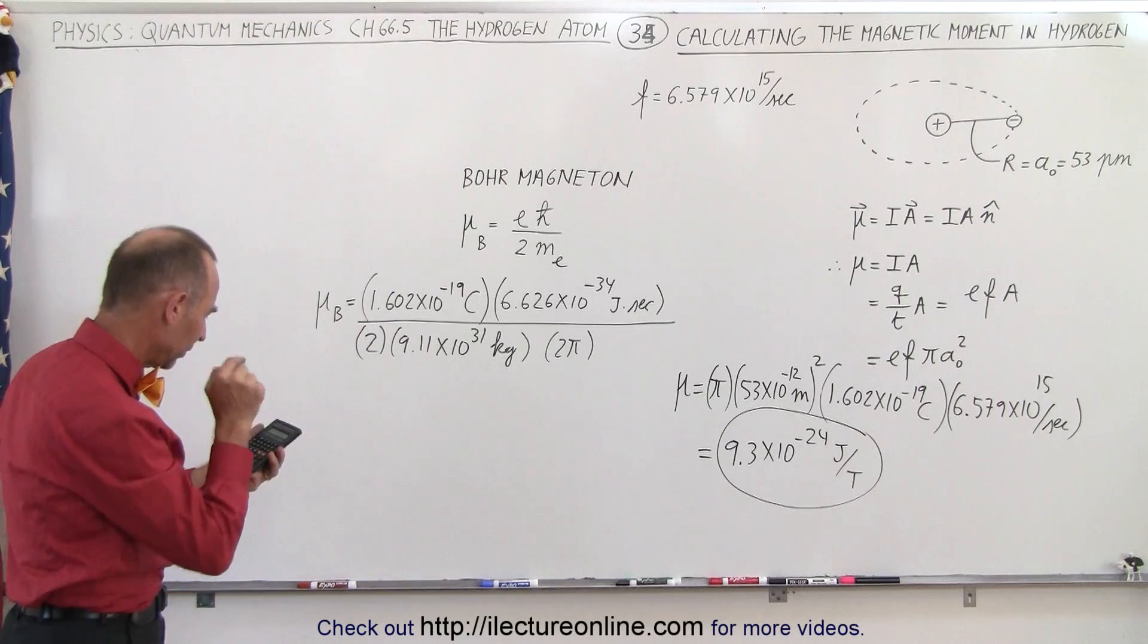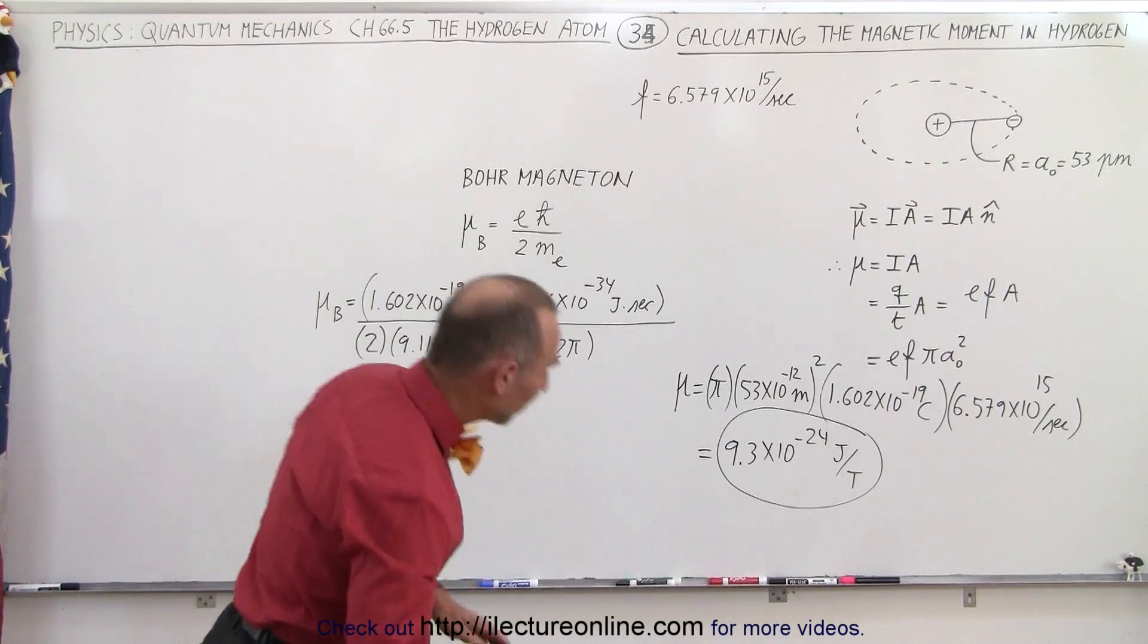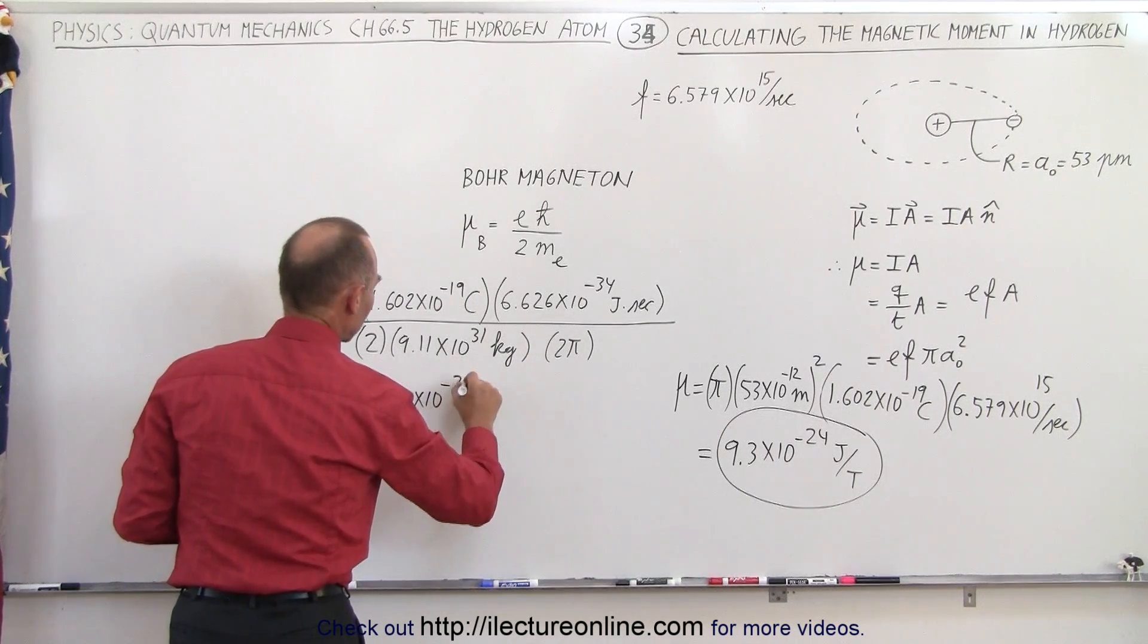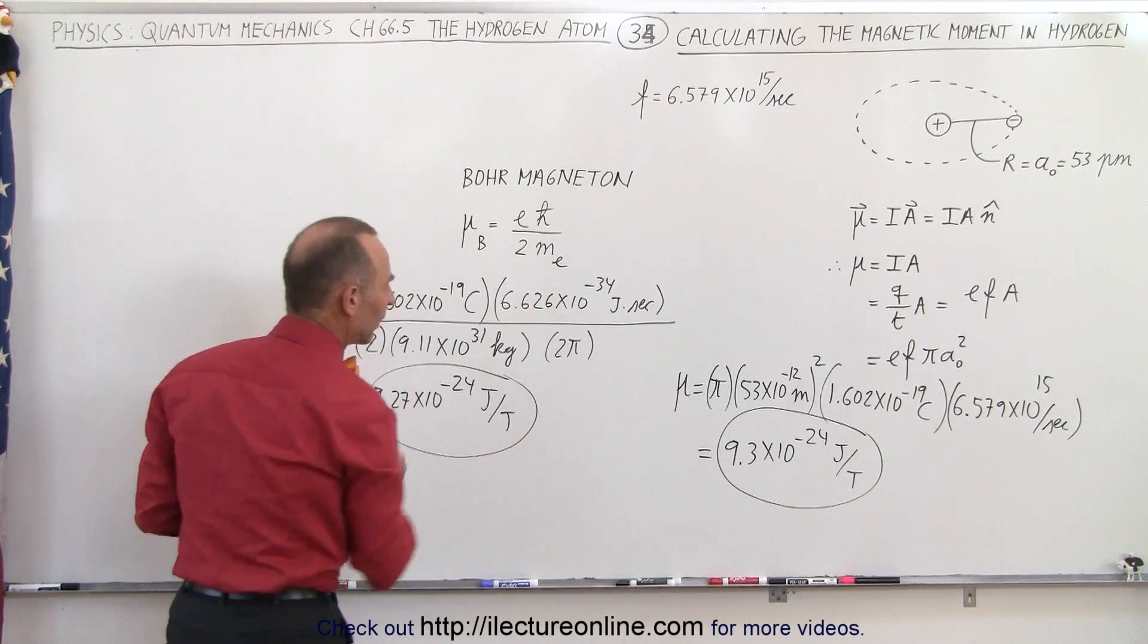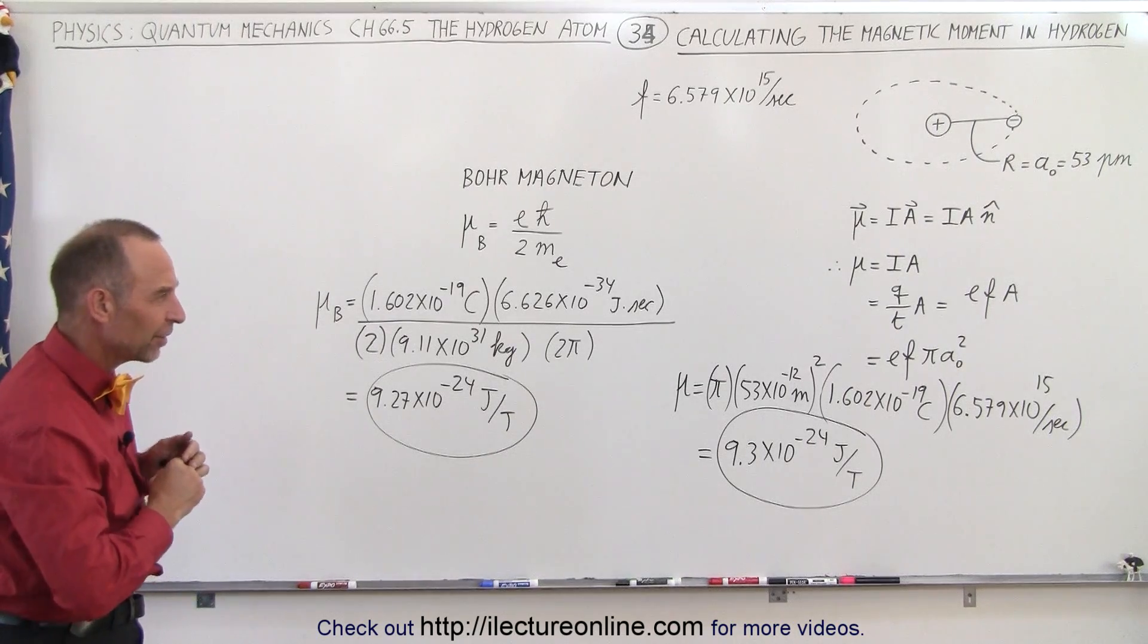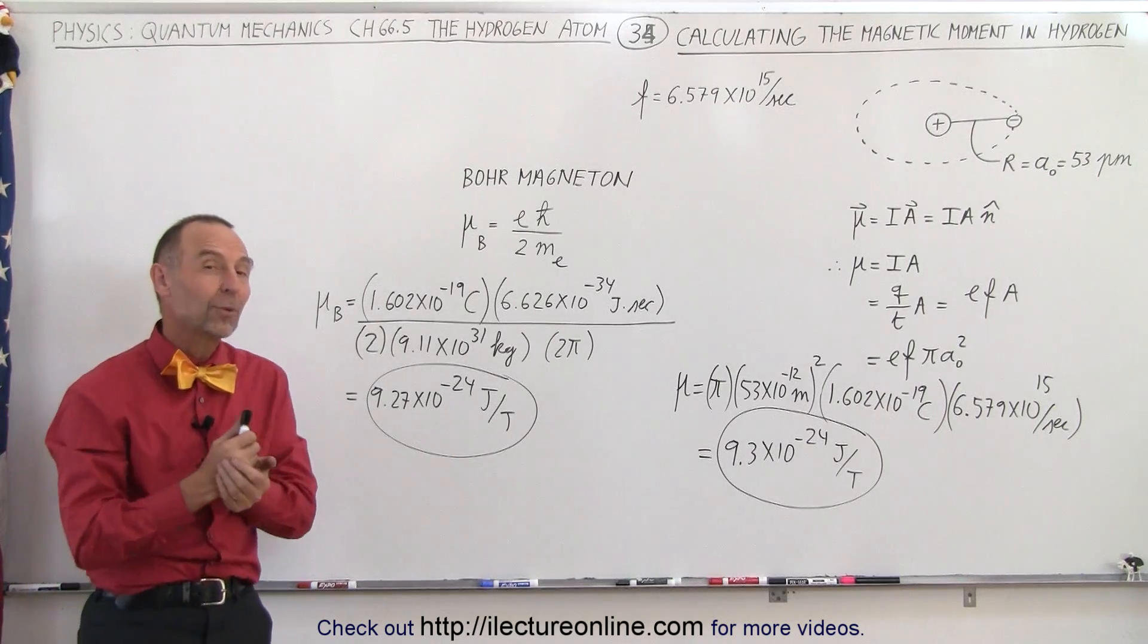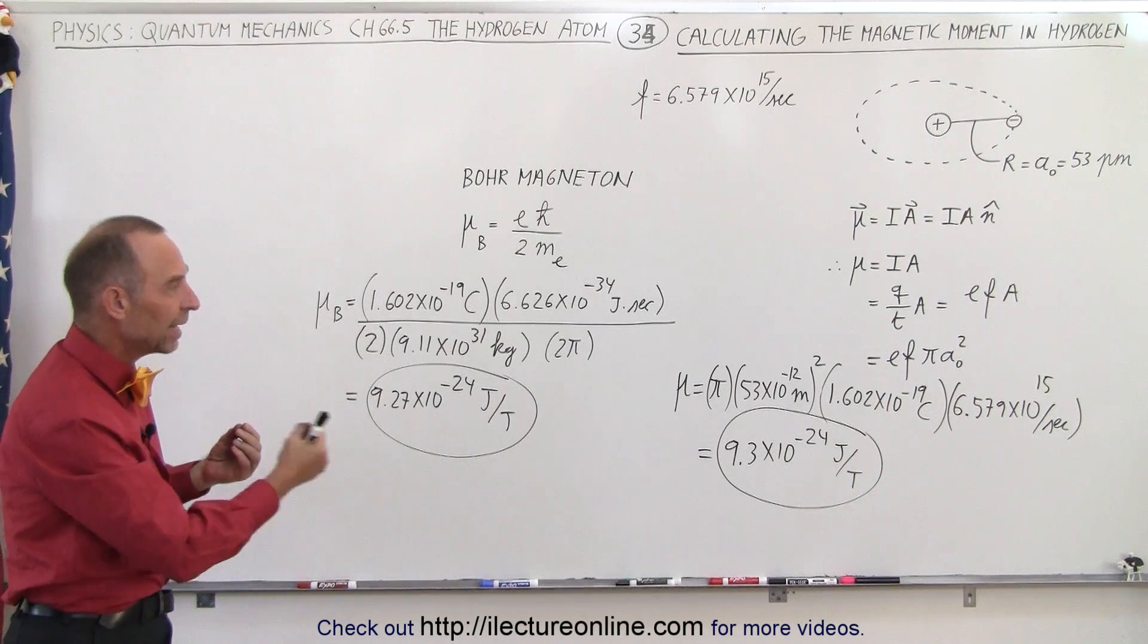And there we get 9.27 times 10 to the minus 24. 9.27 times 10 to the minus 24 joules per tesla. And notice how close we got with both results. The rest probably just some runoff errors and some numbers that we don't have quite as accurate as we should. But you can see that this is how we calculate the magnetic moment of an electron in a hydrogen atom.